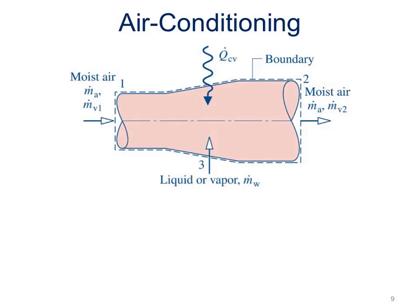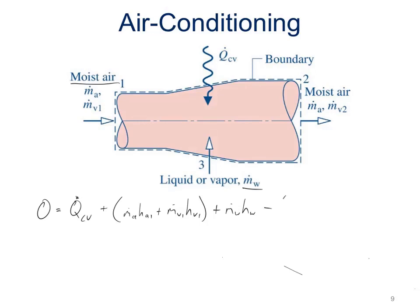On the energy side, let's look at the energy equation. This is steady state, so zero on the left-hand side. We have some Q-dot of our control volume, plus the moist air coming in at state 1: the mass flow rate of air times the enthalpy of air at state 1, plus the mass flow rate of the vapor at state 1 times the enthalpy of the vapor at state 1. Then we add the mass flow rate of water times its enthalpy, minus the mass flow rate of air times the enthalpy of air at state 2, plus the mass flow rate of the vapor at state 2 times the enthalpy of the vapor at state 2.